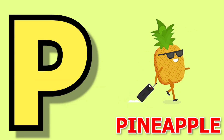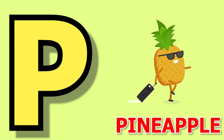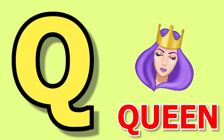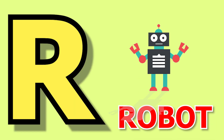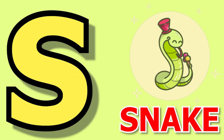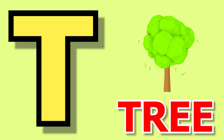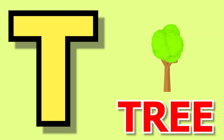P for pineapple, pineapple means ananas. Q for queen, queen means rani. R for robot, robot means robot. S for snake, snake means sap. T for tree, tree means pig.